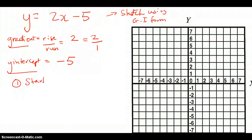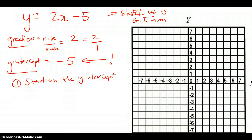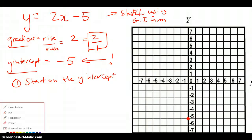Step 1: you need to start on the y-intercept. We always look at the y-intercept value first. We start where y equals minus 5, so going down the y-axis, y equals minus 5 right here — I'll put a dot there. Now, rise over run of 2 over 1 means for every 2 that you go up, you go 1 across.